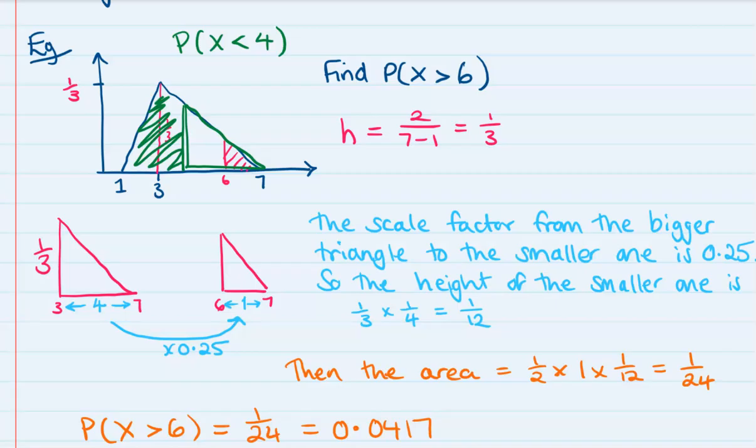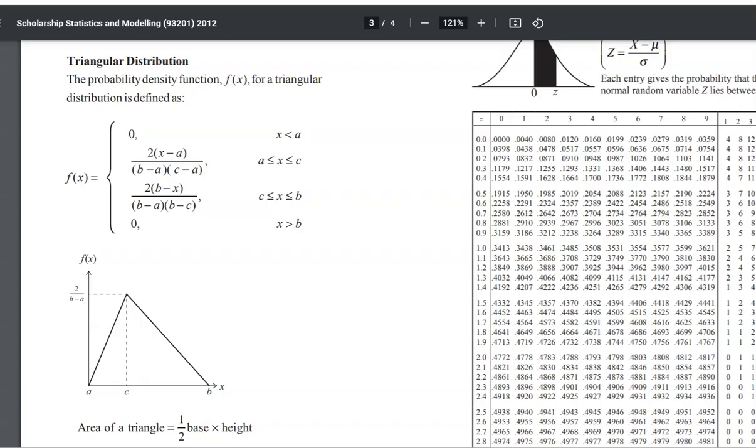I mentioned earlier there is a formula on the formula sheet for this, and this is what it looks like. You can see now why I don't bother using it. It's a little bit over-complicated for what we're trying to do. Similar triangles is an easier process, I think. But this formula here will help you work out the height anywhere on the triangle that you need. It's important to remember this f of x only gives you the height, it does not give you the probability and the area.